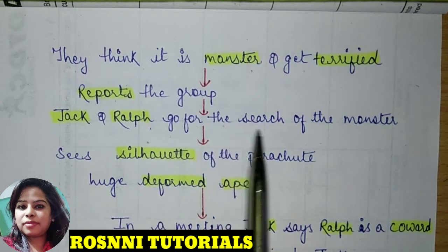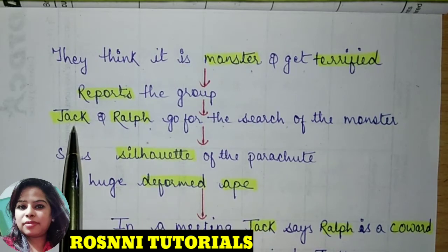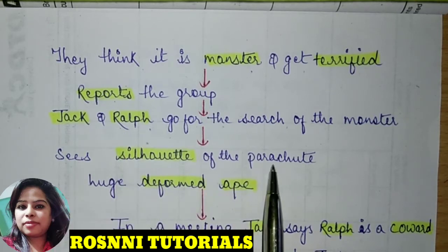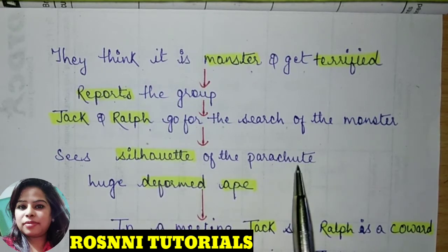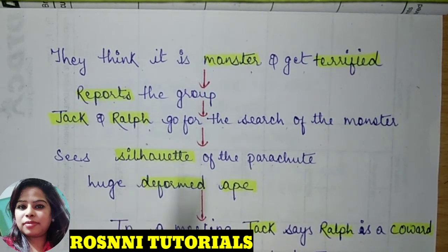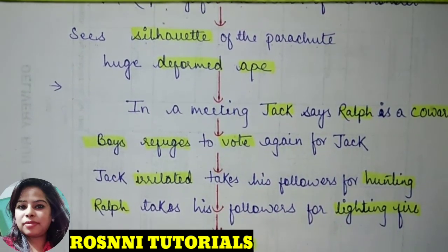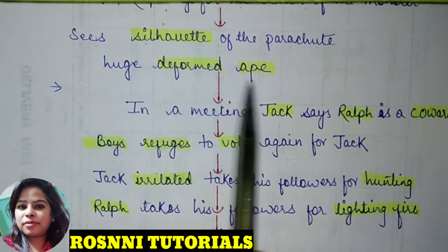Jack and Ralph went to search for the monster, both wanting to show their courage and bravery. They came out from their shelter and went to investigate. But what they saw was the silhouette of the parachute hanging on a tree, which they mistook for a deformed ape or monster.